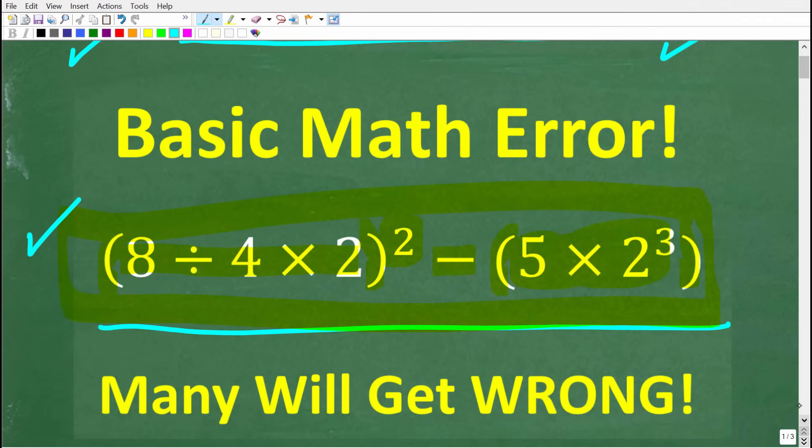All right, so once again, we're not using a calculator, and here is the problem. We have two sets of parentheses here and here. And inside the first set, we have 8 divided by 4 times 2 squared minus. Inside these parentheses, we have 5 times 2 to the third power. All right, so let's see the solution to this problem.